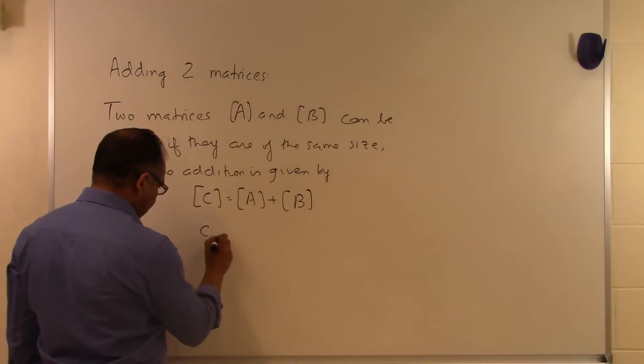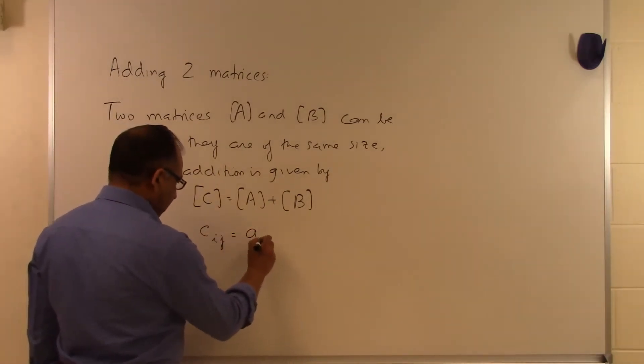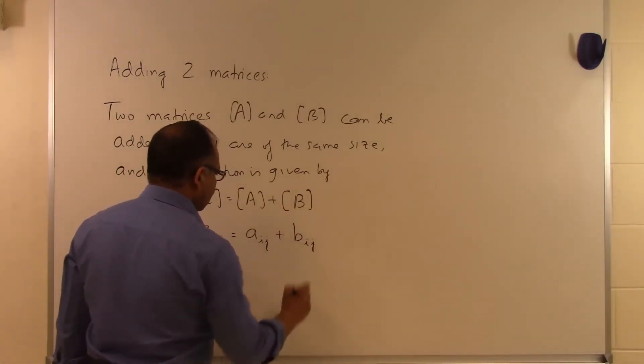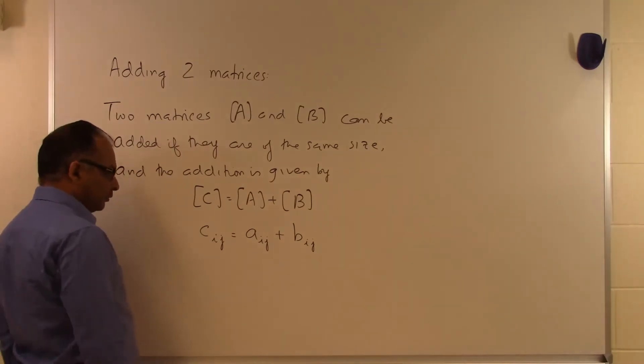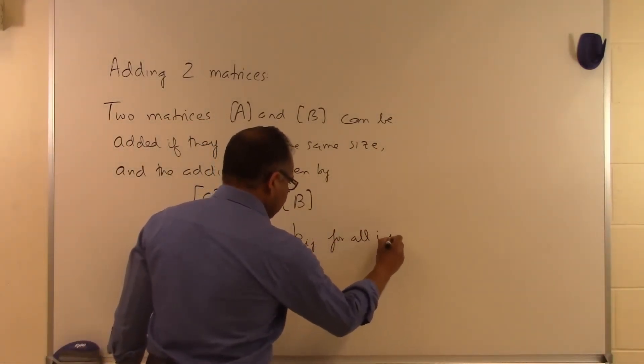We get the value of C by simply taking the i,jth element of A, adding it to the i,jth element of B, and we get the i,jth element of C. This is true for all i,j.